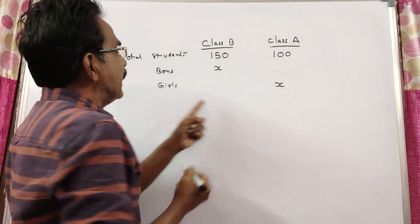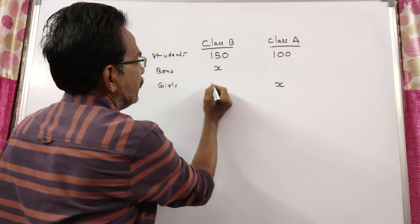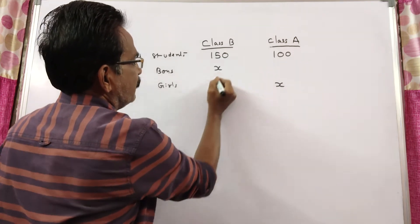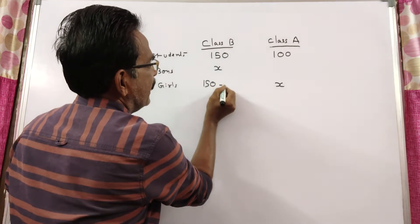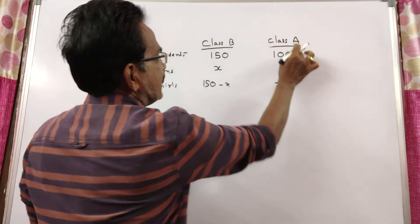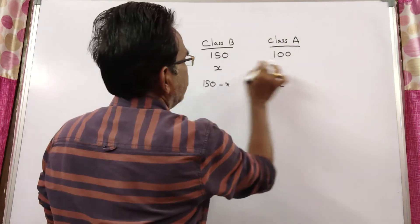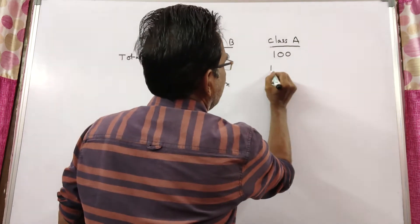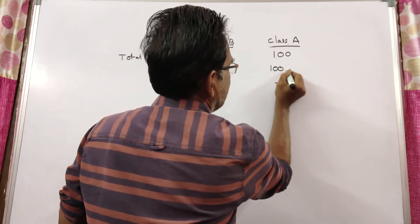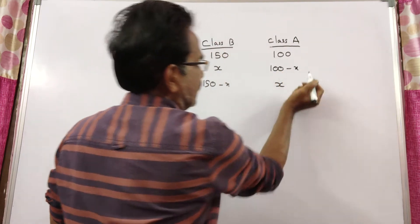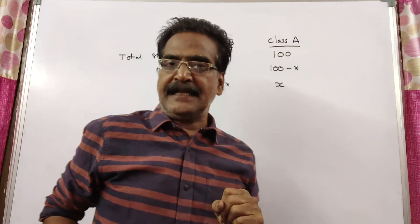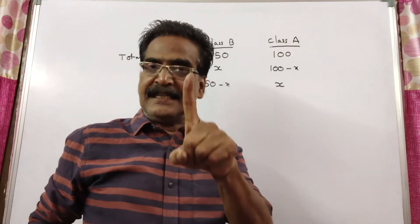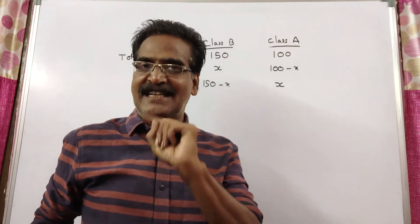So in class B, number of girls is 150 minus X, and in class A, number of boys is 100 minus X. The third statement is about the percentage of girls.